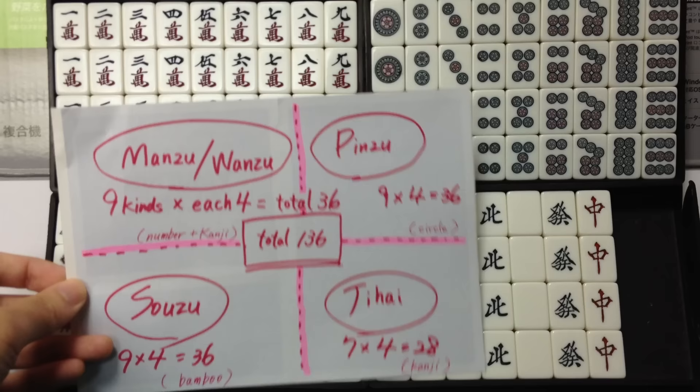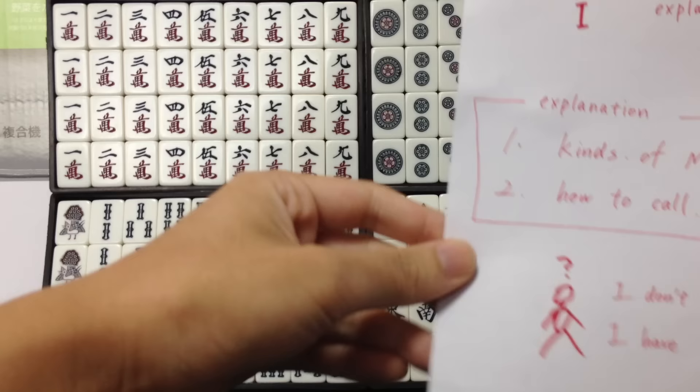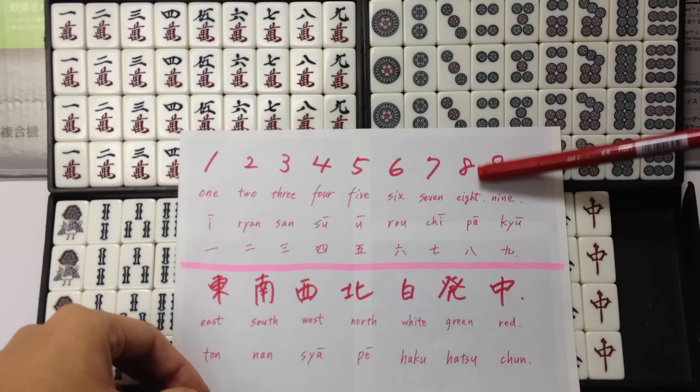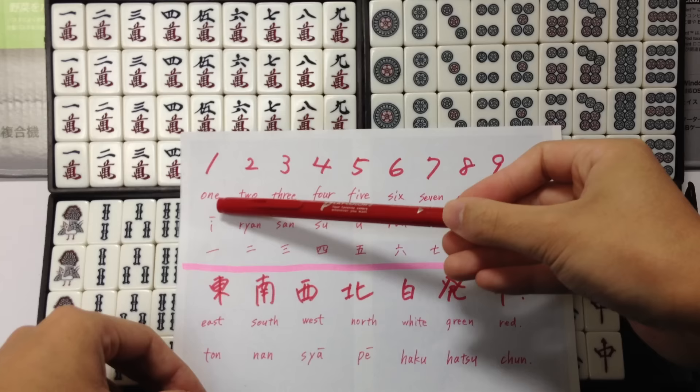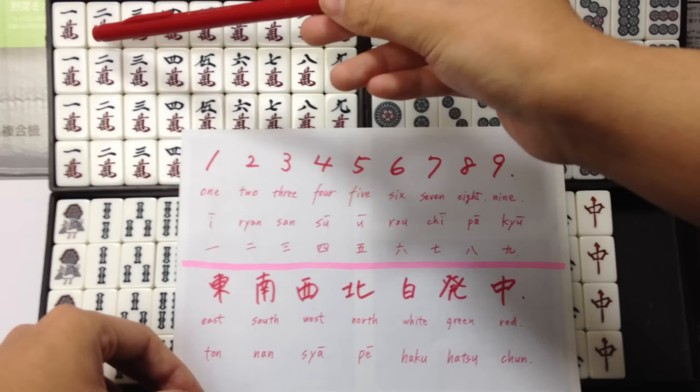Next, how to call mahjong tiles. In English: 1, 2, 3, 4, 5, 6, 7, 8, 9. In Chinese: 1, 2, 3, 4, 5, 6, 7, 8, 9.